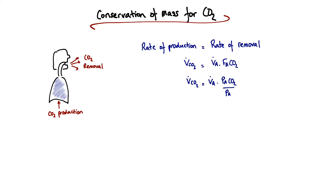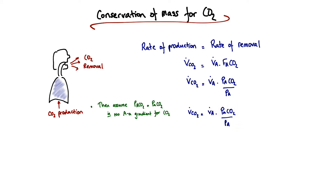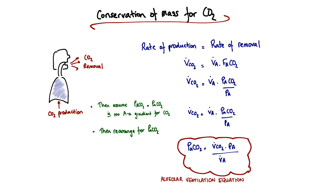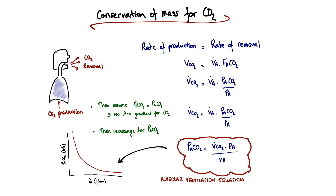We then assume that because CO2 rapidly diffuses across the alveoli, the partial pressure of CO2 within the alveolar gas is equal to the partial pressure of CO2 within the pulmonary capillaries — i.e., there's no A-a gradient for CO2. We can then rearrange to get P small a CO2 on its own, which gives us the alveolar ventilation equation. This equation shows an inverse relationship between arterial CO2 tension and alveolar ventilation: as alveolar ventilation increases, arterial CO2 decreases.